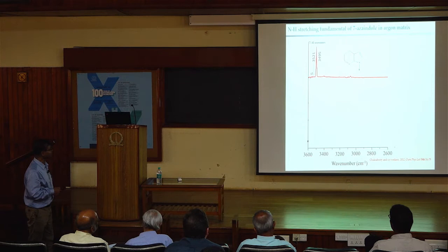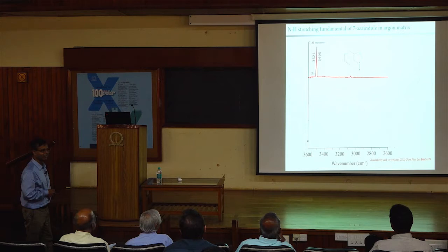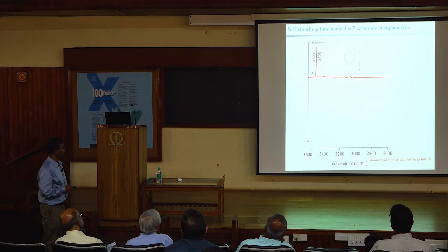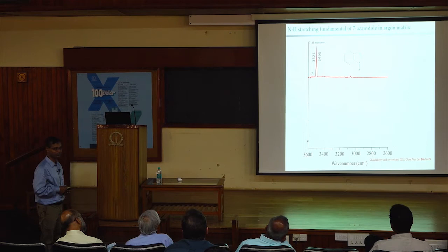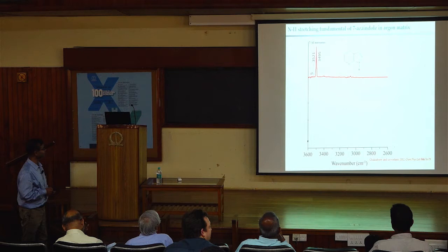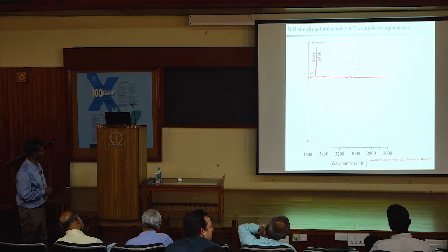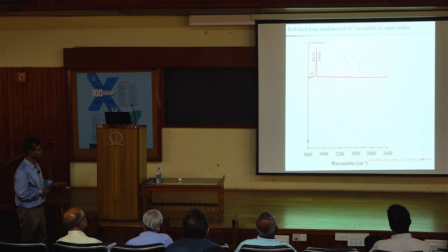For this I take the example of 7-azindole, which Sanjay already talked about. Our experiment is that we try to trap this molecule in inert gas matrices — argon gas and also nitrogen gas — and then record the infrared spectrum both for the isolated molecule and also by annealing the matrix to allow complex formation. What I am showing here is the matrix-isolated spectrum of 7-azindole in argon matrix, where the molecules are isolated but the effect of the environment is very prominent.